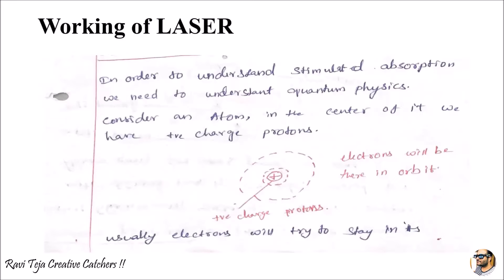Now let's see the working of a laser — how it is able to produce a high-directivity beam and how the light is projected through a laser. To understand the operation of a laser, stimulated absorption, and the different properties, we first need to consider the atom. In the center of this particular atom we have charged protons.